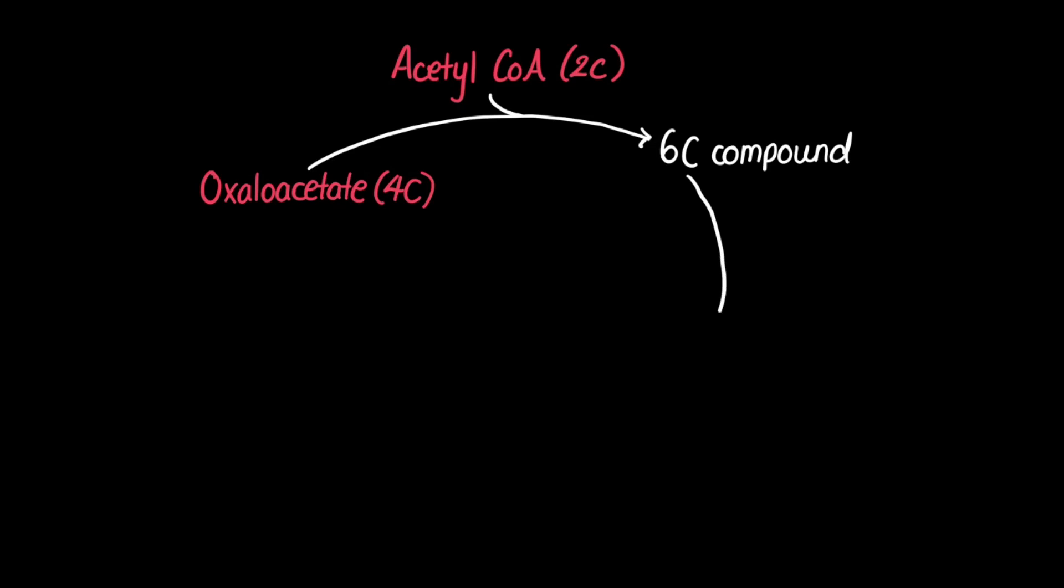This 6-carbon compound is then converted into a 5-carbon compound, and this occurs through the loss of one molecule of CO2. This is also where we first see oxidation coupled with the reduction of the electron carrier NAD+. One NAD+ is reduced into NADH.